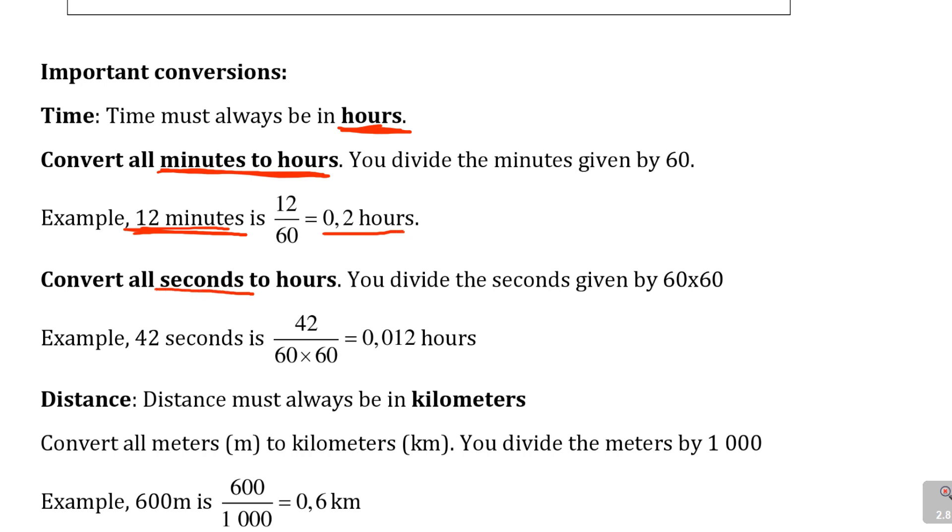What about if you're given seconds? You still need to take them to hours. From seconds, you go to minutes by dividing by 60. From minutes, you go to hours, dividing by 60 again. Hence here, we are saying you divide seconds by 60 times 60. For example, if you are given 42 seconds, how do you convert it to hours? You take 42, you divide it by 60 times 60, or some will say by 3600. Then it will convert it to hours.